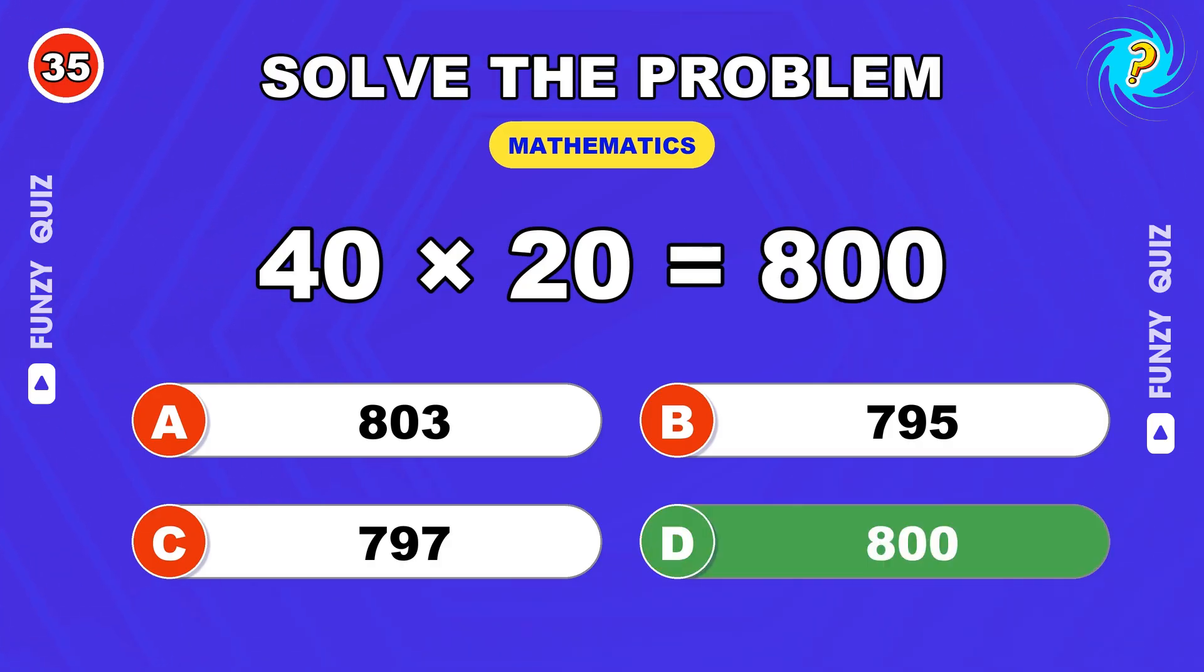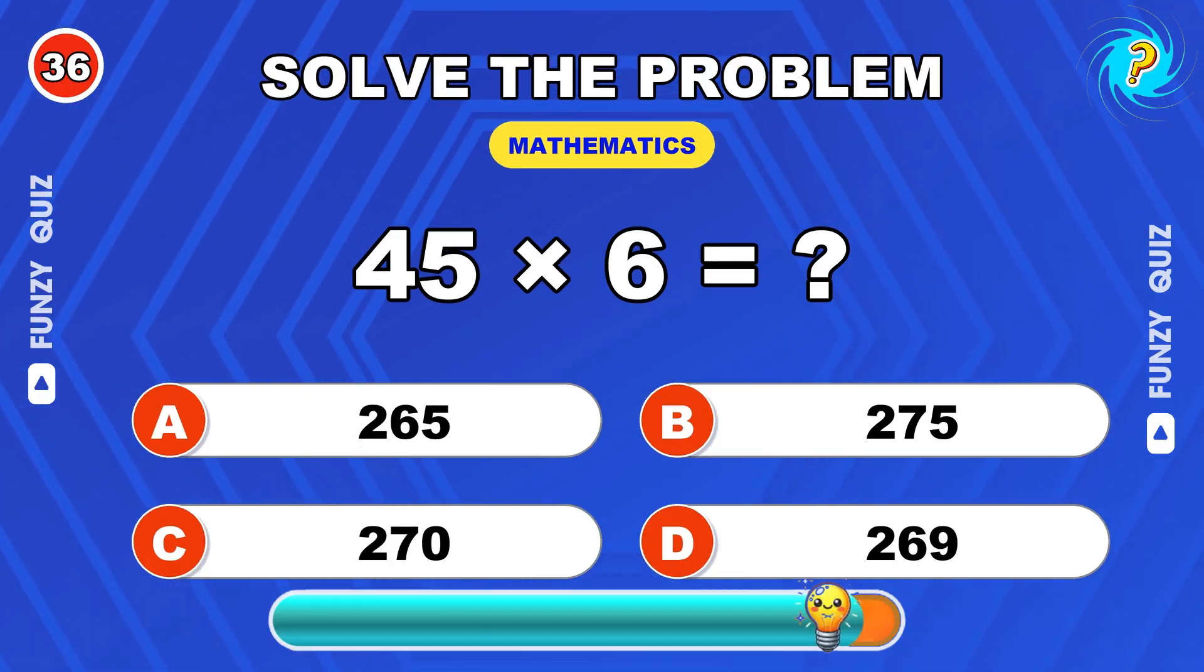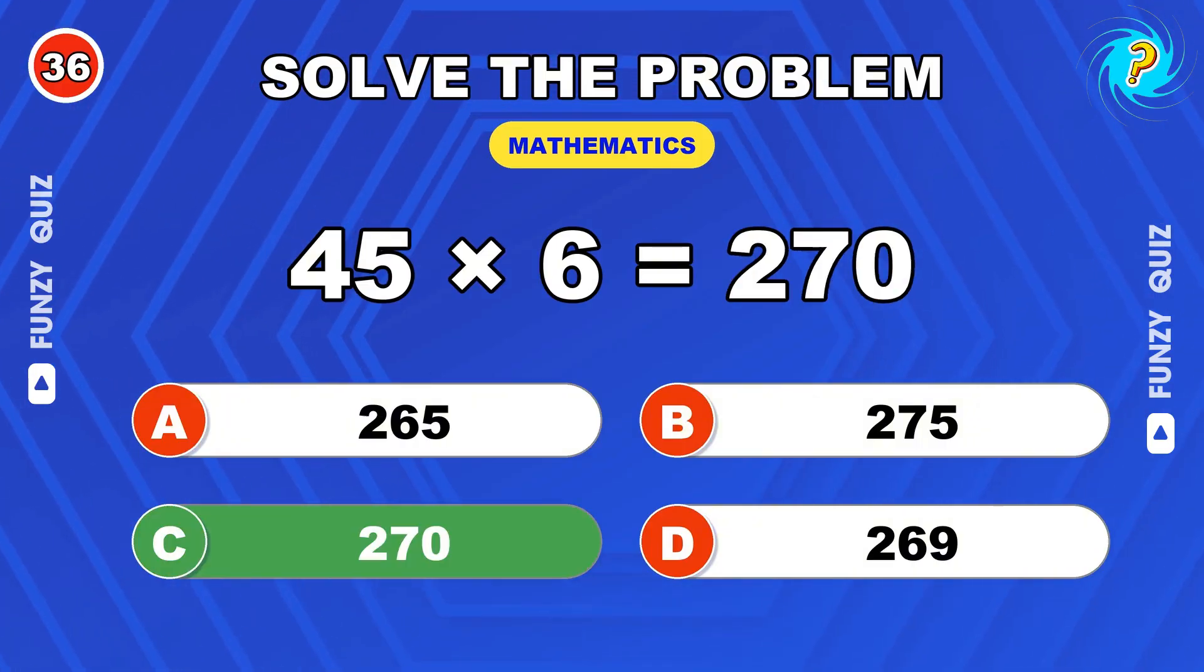Round numbers ahead. 800. Here we go again. 45 times 6. 270.